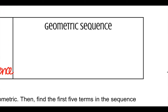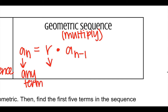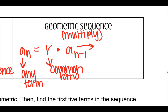For geometric — this one means to multiply — the formula is a-sub-n equals r times a-sub-(n minus one). Again, a-sub-n stands for any term. R is the common ratio, and a-sub-(n minus one) is the previous term.